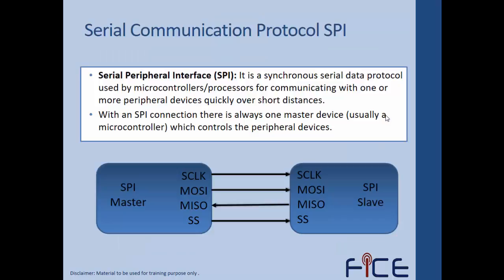SPI stands for Serial Peripheral Interface. It is a synchronous serial data protocol used by microcontrollers and processors for communicating with one or more peripheral devices quickly over short distances. With an SPI connection, there is always one master device — usually a microcontroller or processor — which controls the peripheral devices. SPI is essentially a master-to-slave communication protocol.